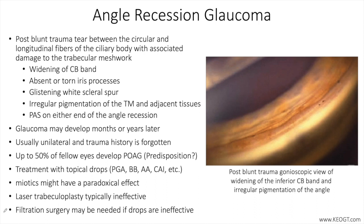A common teaching is the fact that in those with angle recession glaucoma in one eye, glaucoma develops in the contralateral eye, devoid of any angle recession or history of trauma, about half of the time.